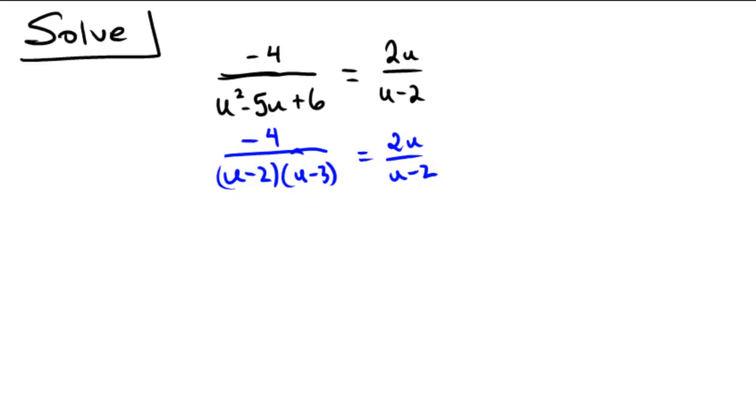So conveniently, there's a u minus 2 on both the left and the right, so I can actually cross that out and make my job easier. But remember that u minus 2 is in the denominator of this expression. So we have to remember as we go through this problem that u cannot be 2. That is not going to be an allowable solution to this problem because it results in a 0 in the denominator.